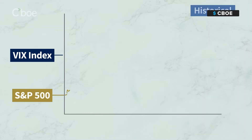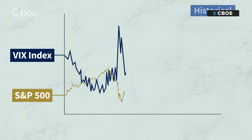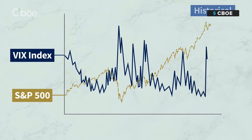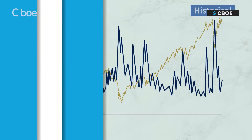Market participants can use CBOE's VIX calculator to ascertain the expected range of the S&P 500 index over the next 30 days based on specific user inputs. The VIX index generally has an inverse relationship to the S&P 500 index — when the VIX index goes up, the S&P 500 index tends to go down and vice versa. This inverse correlation makes tradable VIX futures and options contracts potentially attractive tools to manage or hedge risk.